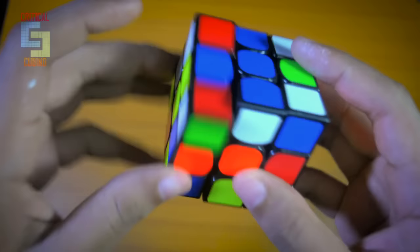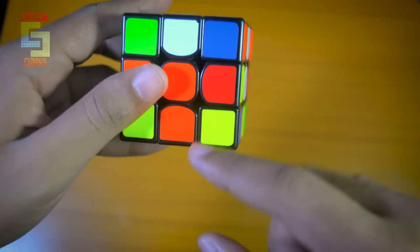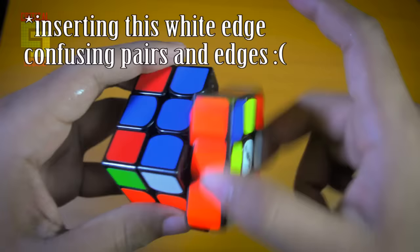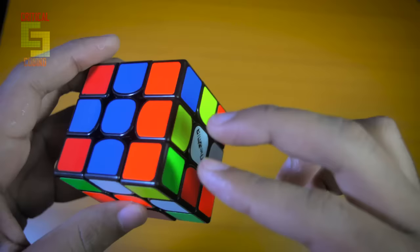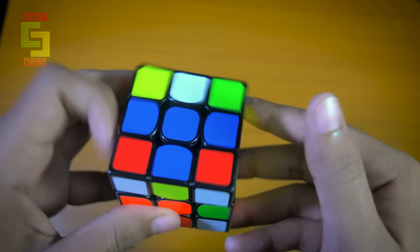Let us solve the cross now. You first insert this orange pair with an L move like this, then you do a D move for matching the cross edge and the center, and lastly you do an R2 for inserting this white pair. So this is your first pair and this is your second pair.